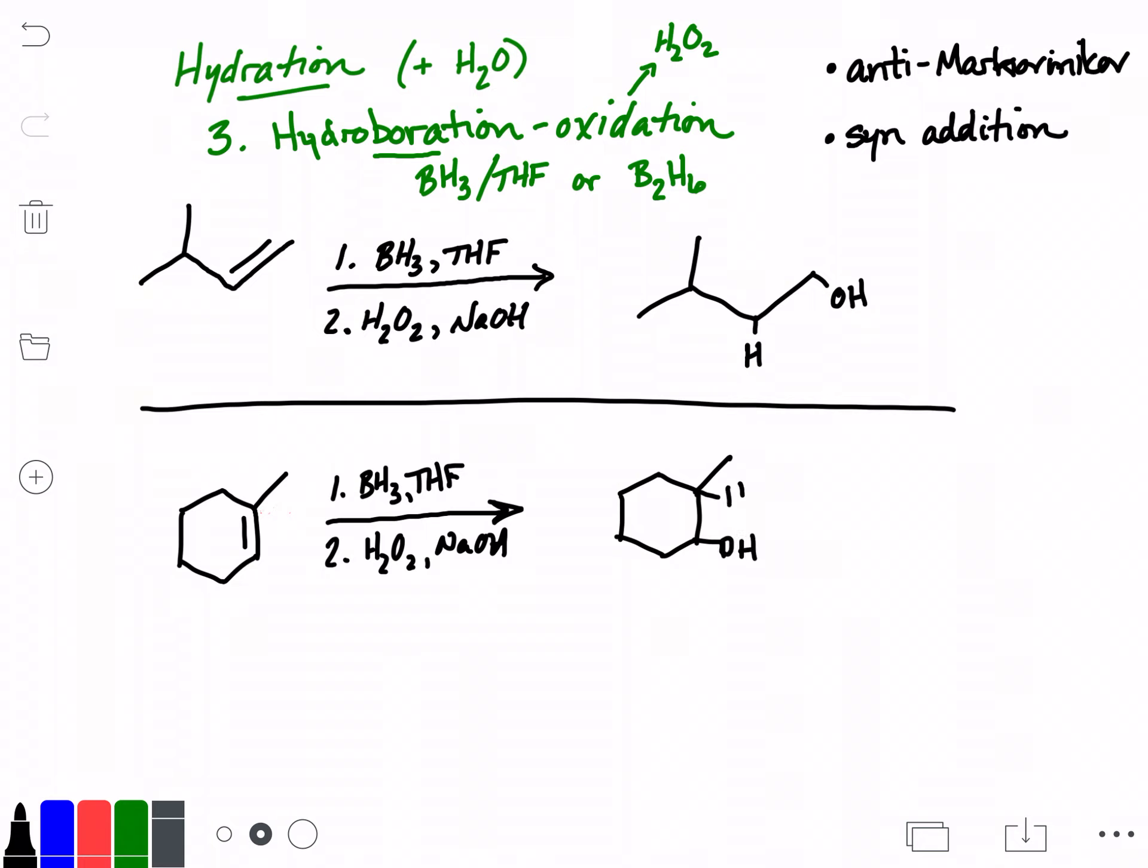Now syn means that the two components are added from the same side of the molecule. And so how do I show that? Well, on a ring structure I can use wedge and dash notation. So if I go in and I erase the little bonds that I made here in the first place, I can show the wedge and dash notation.